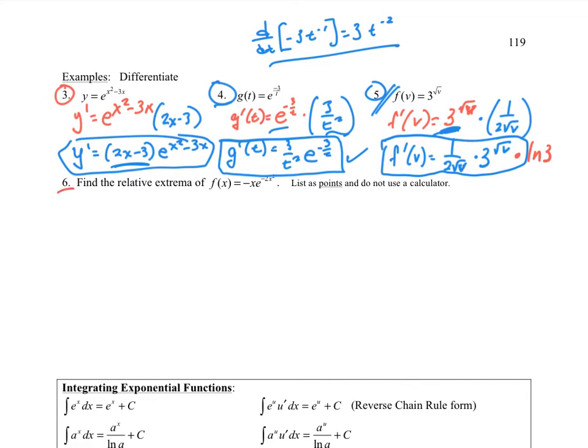Number 6, find the relative extremum of this thing right here. I have f(x) equal to, I'm going to rewrite this. When I look at this thing right here, I look at a product rule. I have two things, two functions there. So I need to use my product rule.